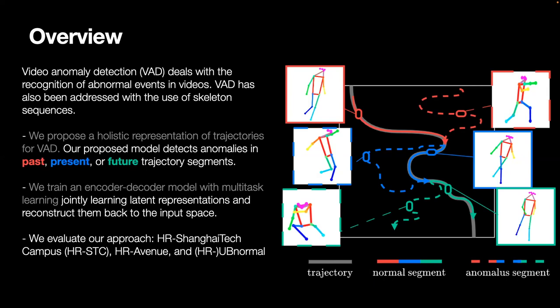We train an encoder-decoder model that can reconstruct trajectories over different locations, at past locations given future trajectory segments, future locations from previous trajectory segments, and in-between segments that use partial observations at the outset of trajectories.